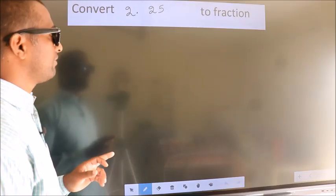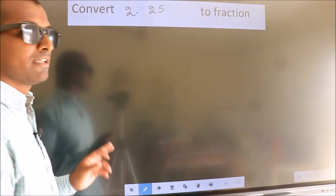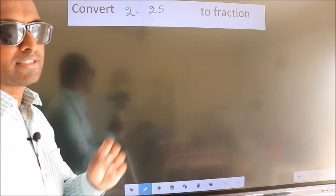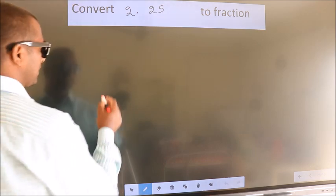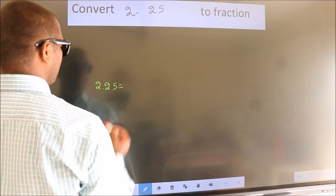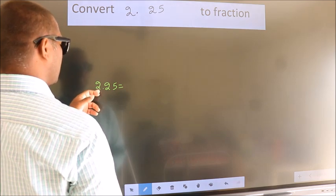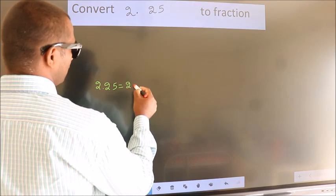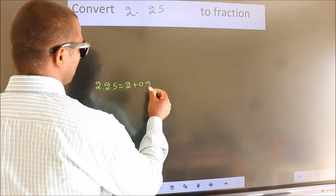Convert 2.25 to fraction. How do we convert? Given is 2.25. First we should break this into 2 plus 0.25.